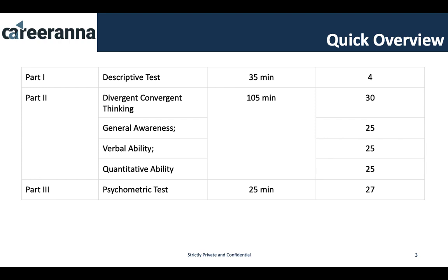Now before jumping to the detailed study plan, let me give a quick overview of the examination. Part 1 consists of a descriptive writing section where you get four questions to complete in 35 minutes — one story writing and three argument writing. Part 2 is the aptitude test with four sections: Divergent Convergent Thinking, General Awareness, Verbal Ability, and CONT. CONT, Verbal, and General Awareness have 25 questions each, and Divergent Convergent Thinking has 30 questions.